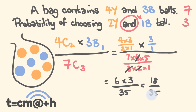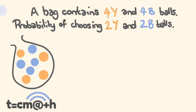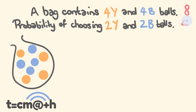This is how you can go through and solve these types of questions really simply. Now I'll give you one to do right now. A bag contains four yellow and four blue balls altogether — that's eight balls. What's the probability of choosing two yellow and two blue balls? So we're going to be choosing four balls from this.